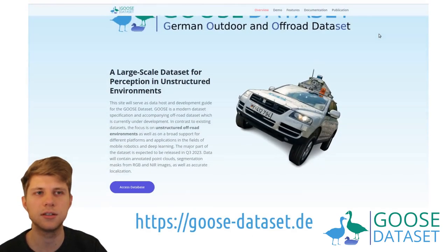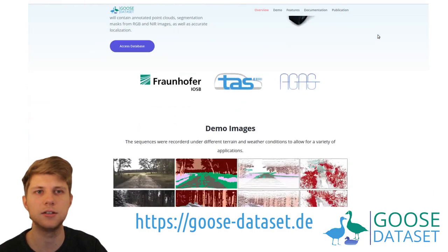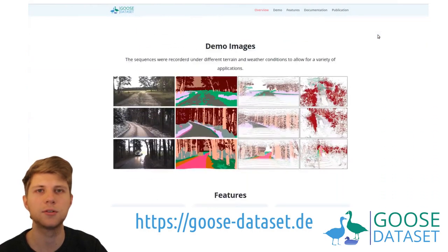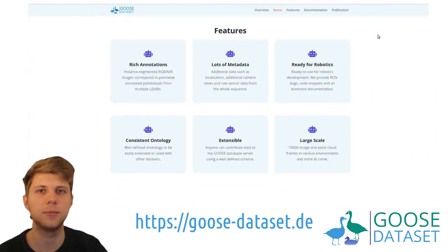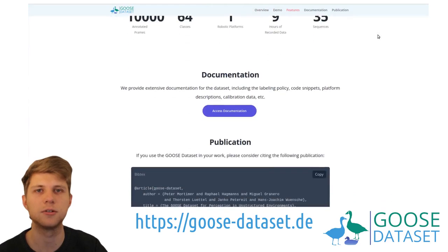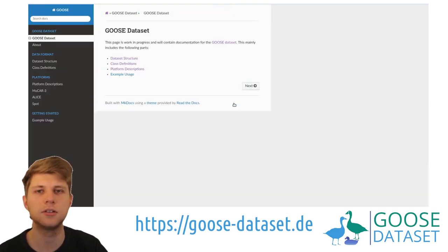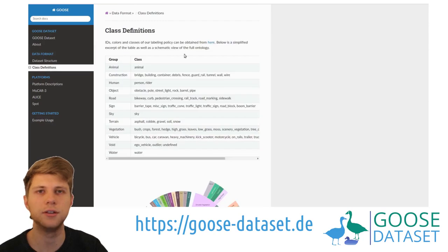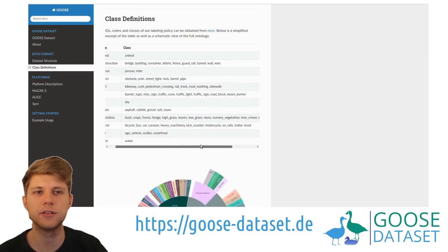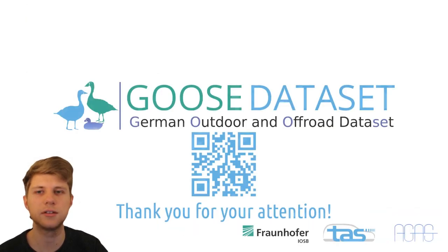The webpage for the GOOSE dataset also provides access to the documentation, which goes into greater detail about the labeling policy and the data acquisition process. The documentation also provides example code to quickly get started with the GOOSE dataset. Here you can also find download links for the 2D and 3D training data. If you are interested in further details, I recommend reading our paper or visiting the GOOSE webpage. Thank you very much for your attention.